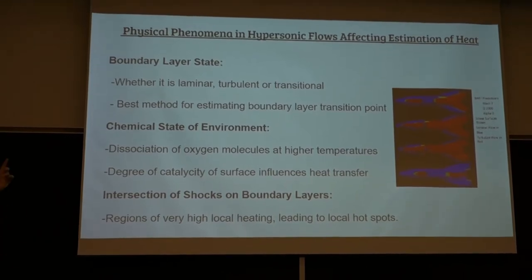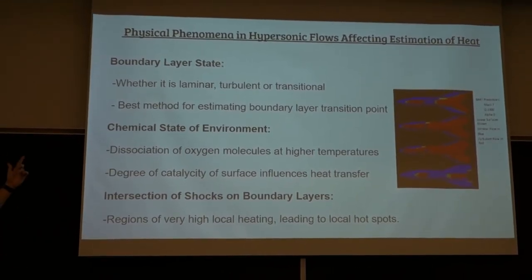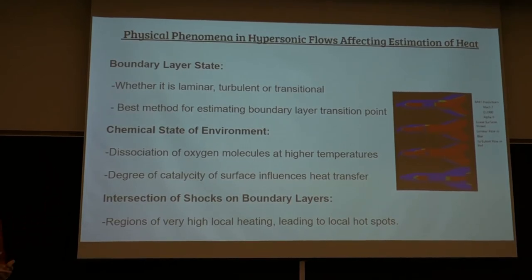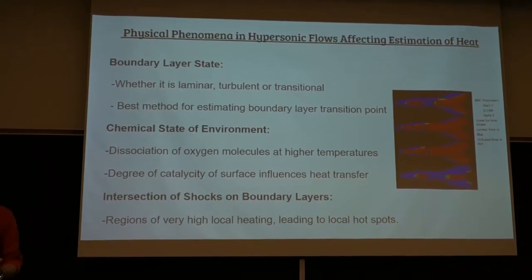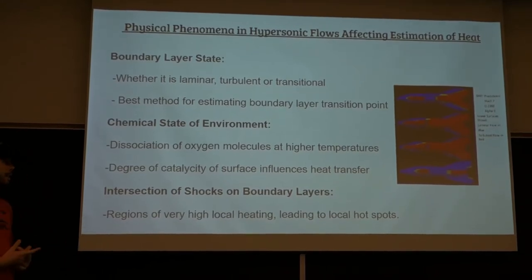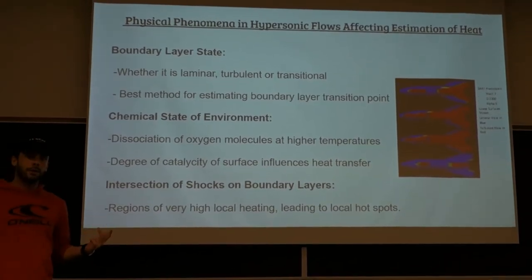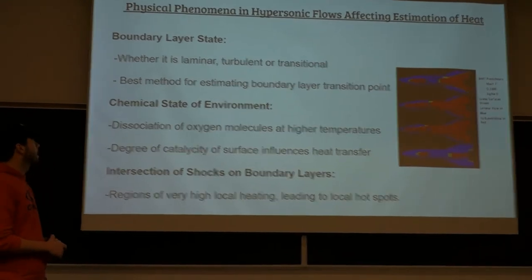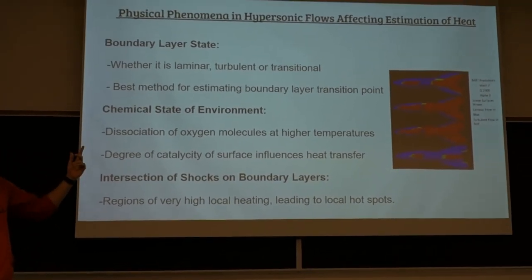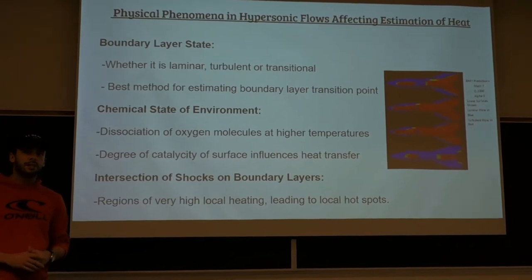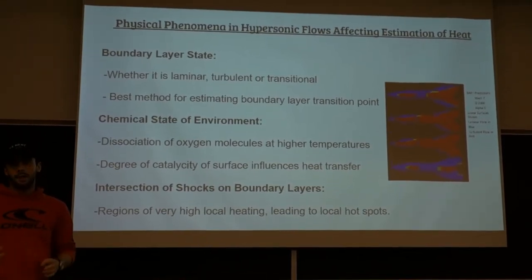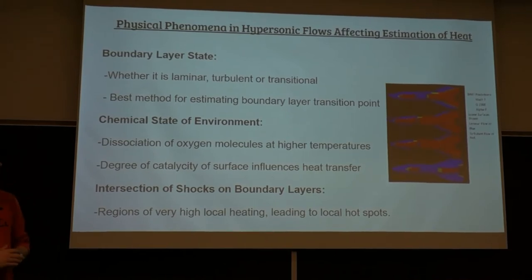When going over boundary layer state, it's really important whether it is laminar, turbulent, or transitional. When it's turbulent, it will lead to higher heat rates, but it also occurs at high Mach numbers and higher temperatures. The best method for estimating boundary layer transition points is using data from previous flight tests and the linear stability theory.